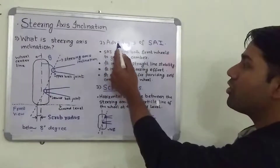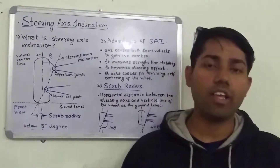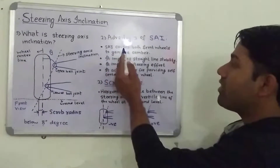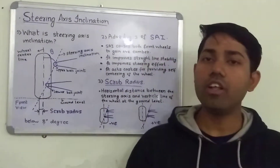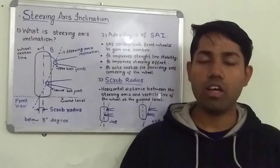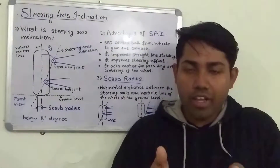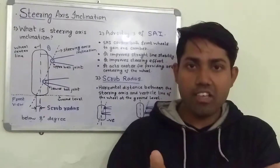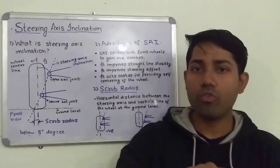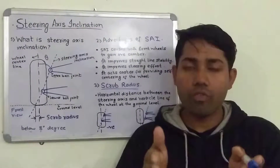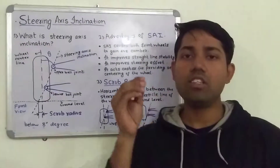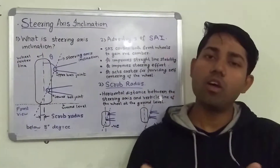Now, coming to the advantages of steering axis inclination. The first advantage is that steering axis inclination causes both front wheels to gain more positive camber. When your vehicle is going on a straight path and there is a turn, you are going to steer your wheel. When the wheel is away from center, the steering axis inclination provides a positive camber effect.